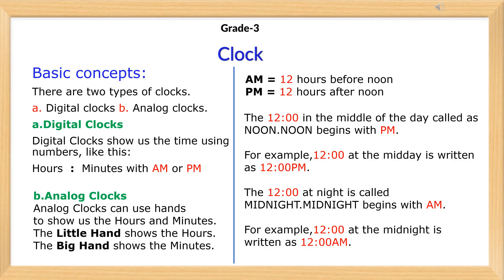Basic concepts. There are two types of clocks. A: Digital clocks. B: Analog clocks.